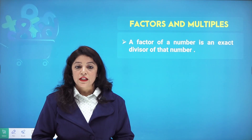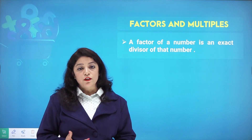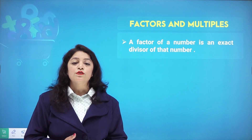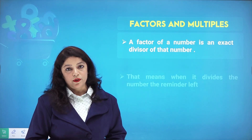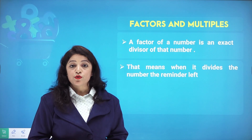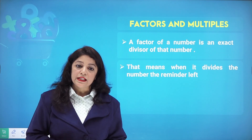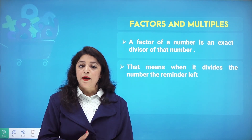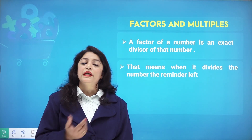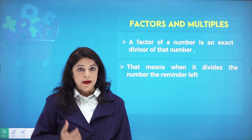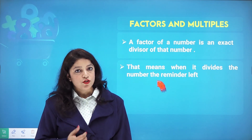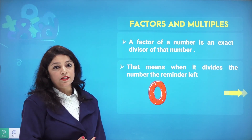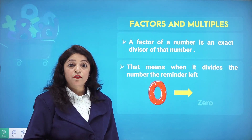A factor of a number is an exact divisor of that number. That means when it divides the number, the remainder left must be zero.